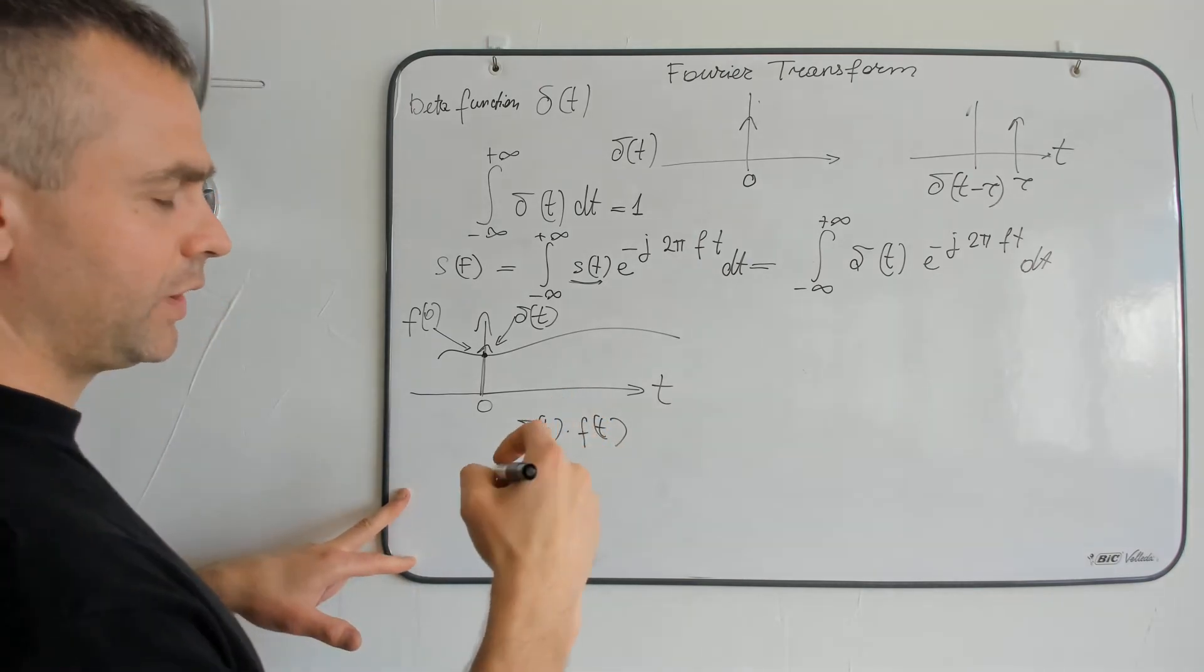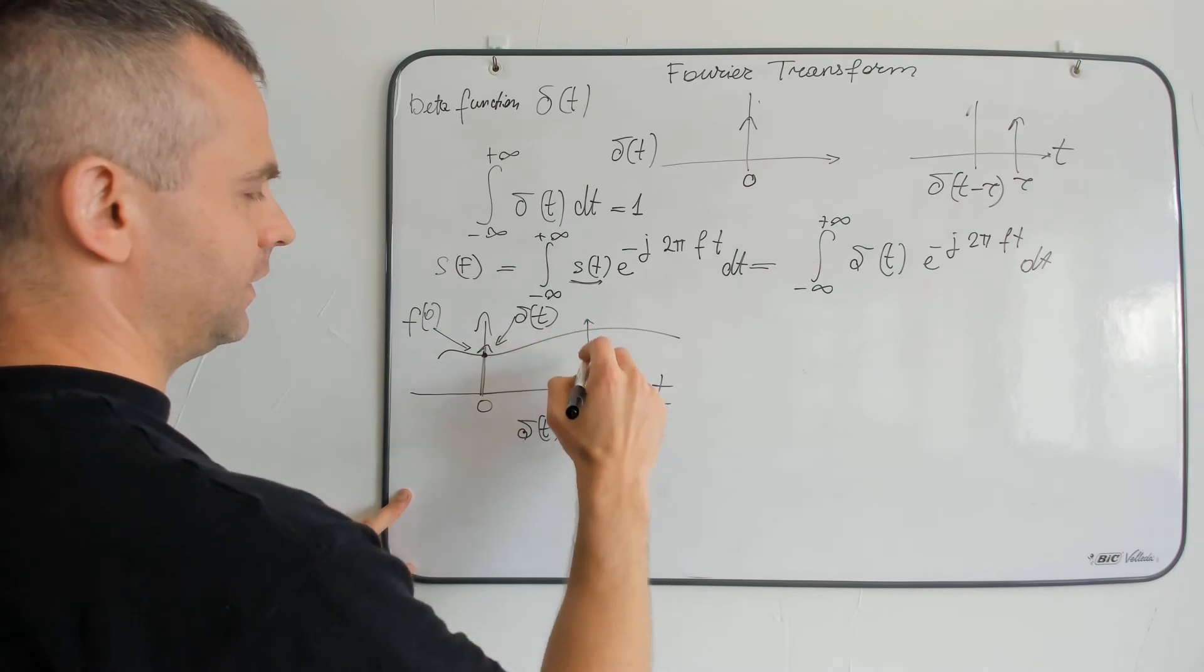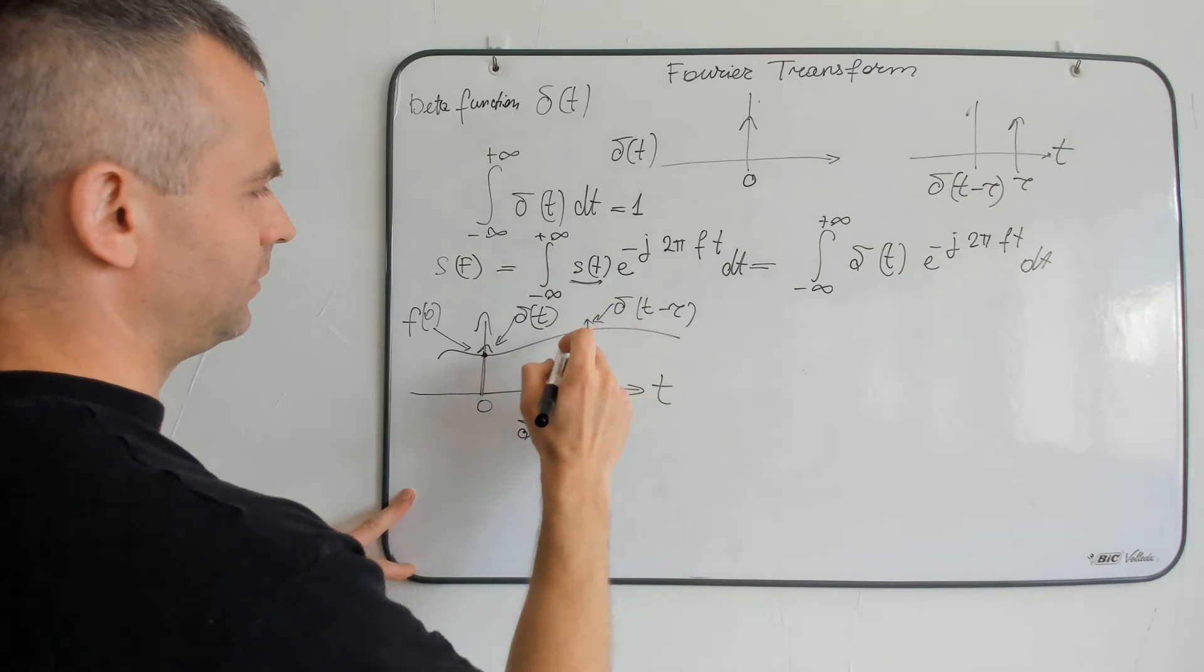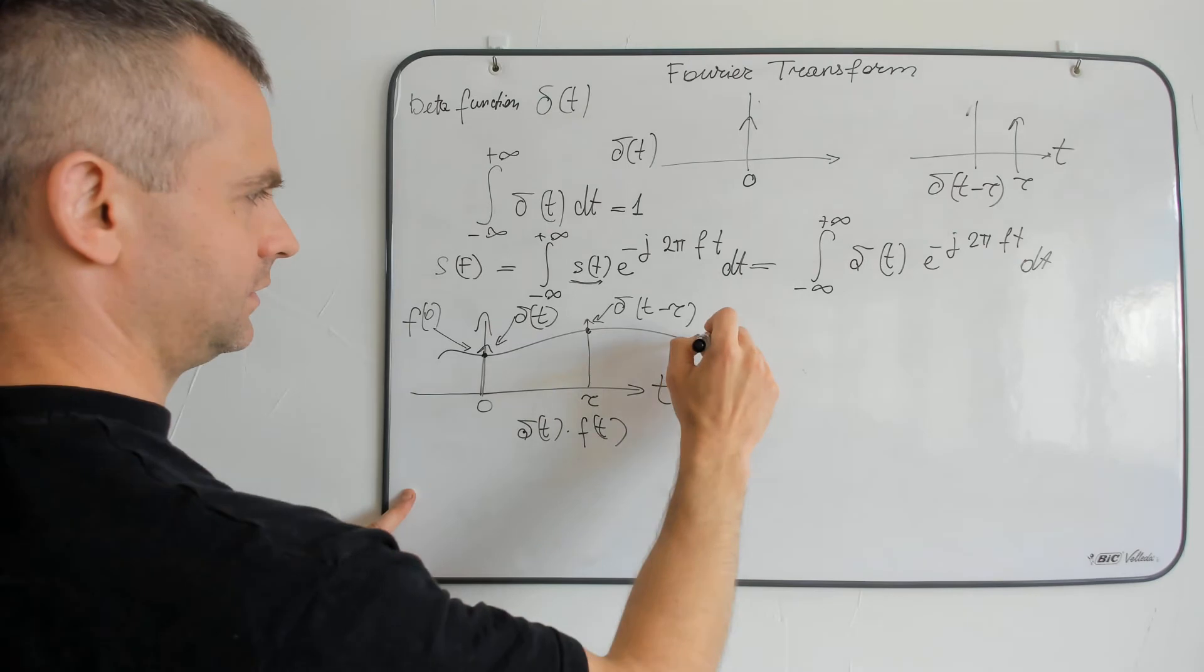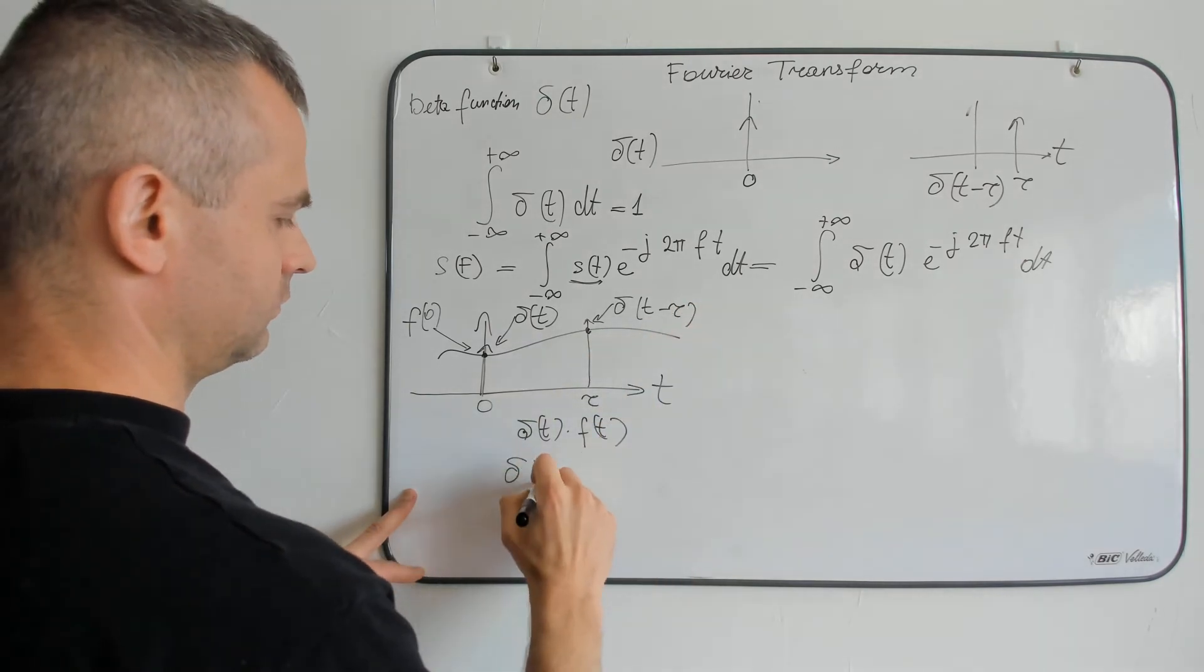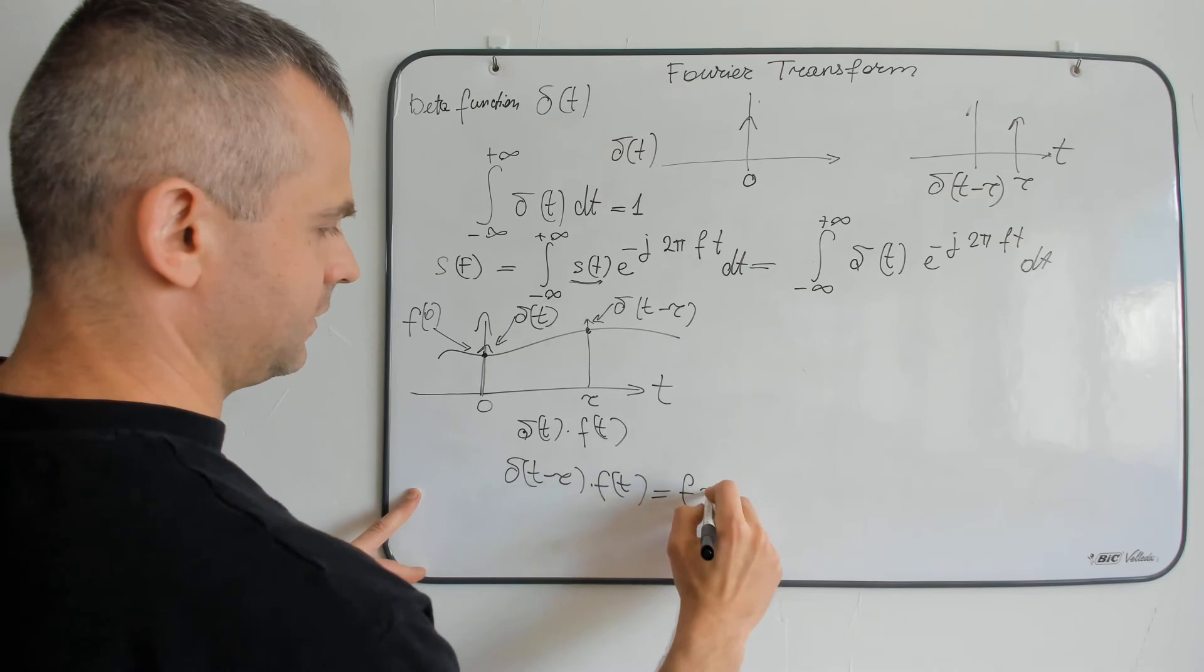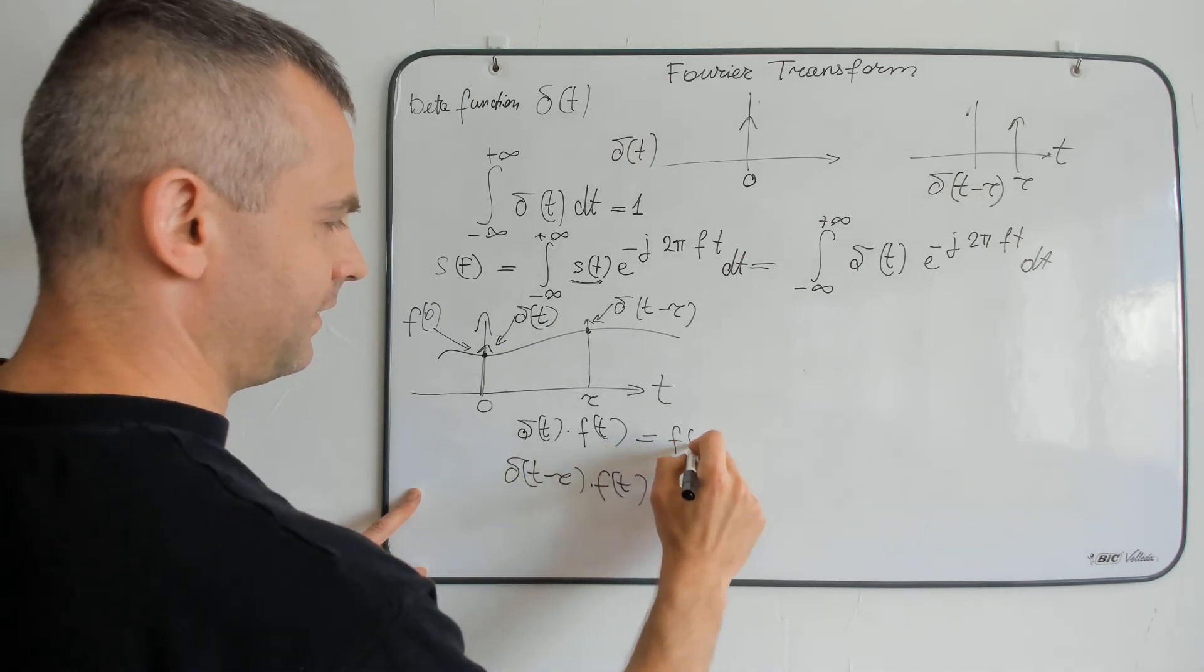But if we use a delayed delta function, here we get f of t0. In case of delayed delta function, here we get f of t0.